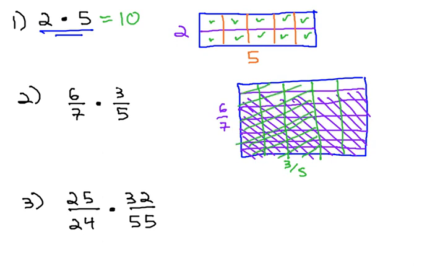And what we end up with is a good amount of the rectangle being double shaded. How much? 1, 2, 3, 4, 5, 6, 7, 8, 9, 10, 11, 12, 13, 14, 15, 16, 17, 18 double shaded sections.